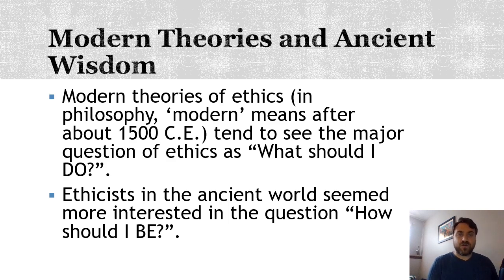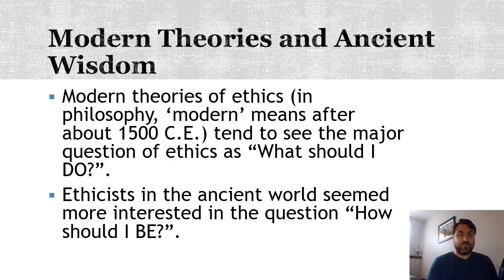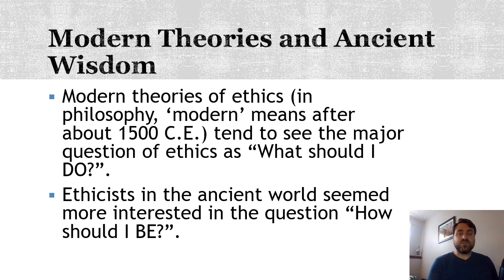Kant is very concerned about action types—what types of actions are right or wrong, and what features make them right or wrong. Pluralists are saying that when you do a thing, you have a duty to do it or not do it. That's a very characteristically modern approach to the field of ethics. There's nothing wrong with it necessarily; it's just not the only possible approach. Ethicists in the ancient world, particularly the Greco-Roman world, were much more interested in the question 'how should I be?' rather than 'what should I do?'